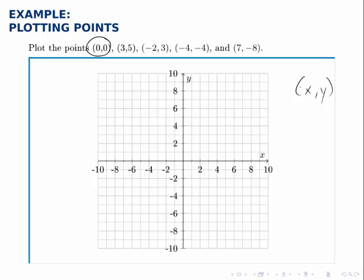To plot a point, we start at the origin where the two number lines cross. Then the x coordinate tells us how far to go to the right or the left along the x axis, and the y coordinate tells us how far to go up or down along the y axis.